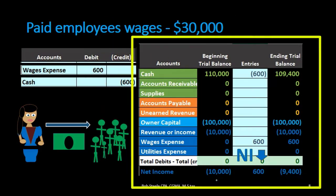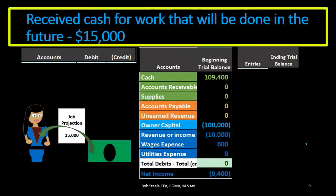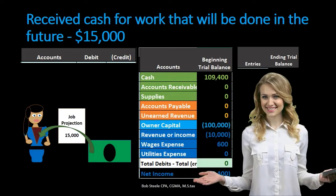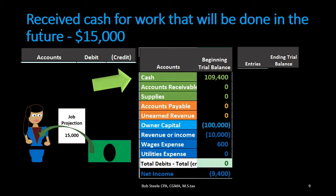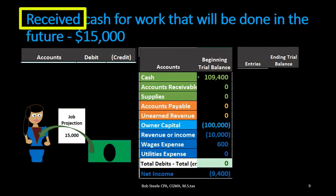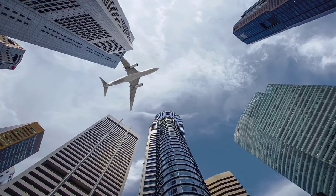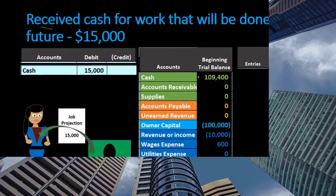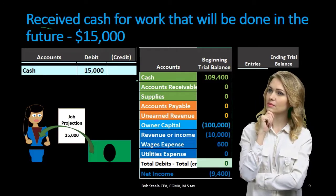Assets went down, liabilities remain the same, and equity is going down because expenses went up, bringing net income down. Net income is calculated as revenue minus expenses. Net income is now at 10,000 minus 600 — which is 9,400. Next transaction: received cash for work that will be done in the future — 15,000. First question: is cash affected? Yes. Is it going up or down? Up — keyword 'received cash.'